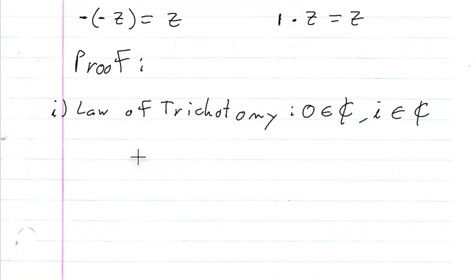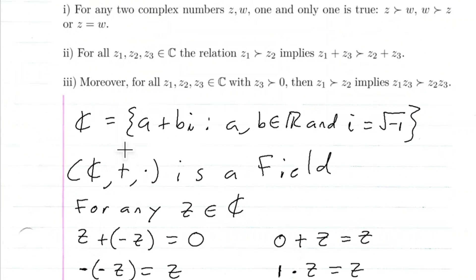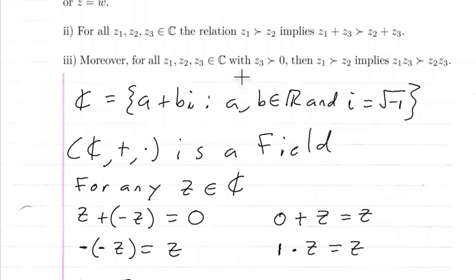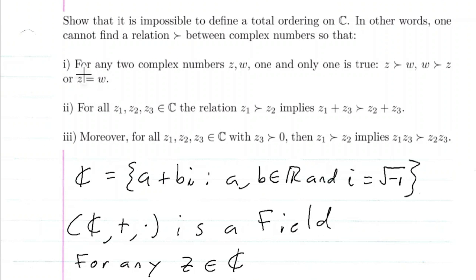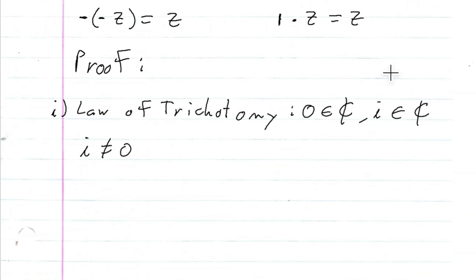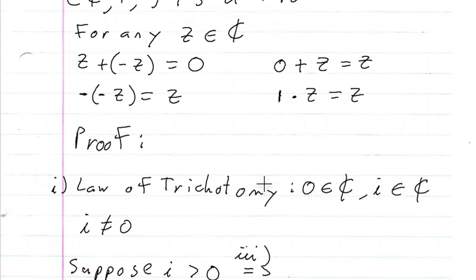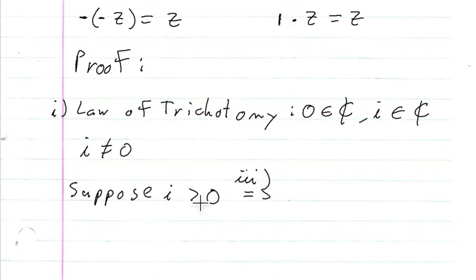Right away, i cannot equal zero because i is defined as the square root of negative one, so I can eliminate that case. Now I need to show that the other two relationships also fail. Suppose i is bigger than zero. By the third axiom, this means i times i is bigger than zero times i.